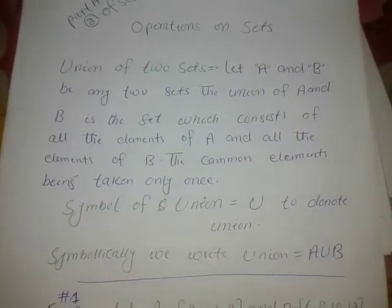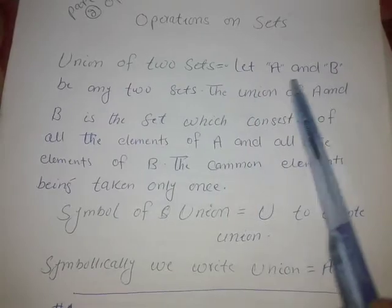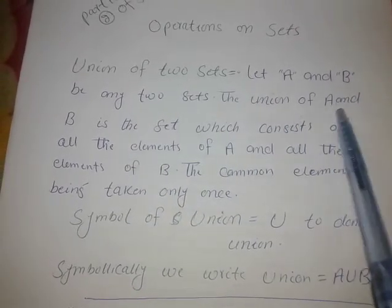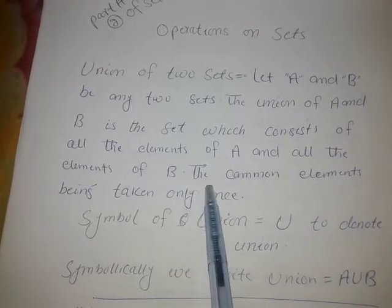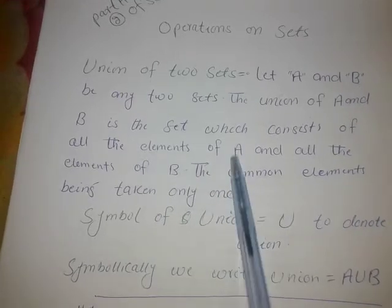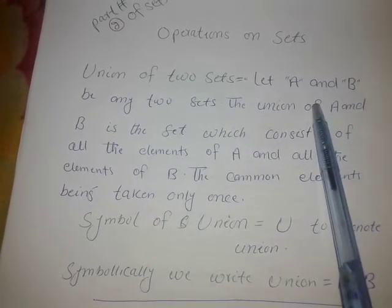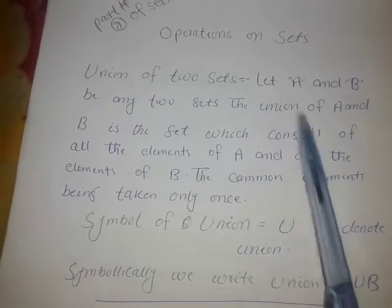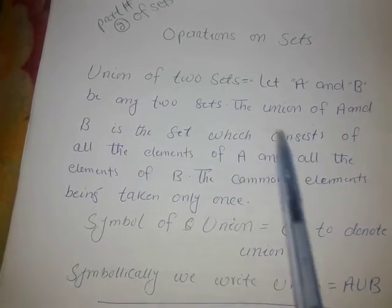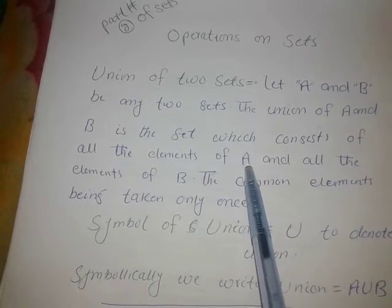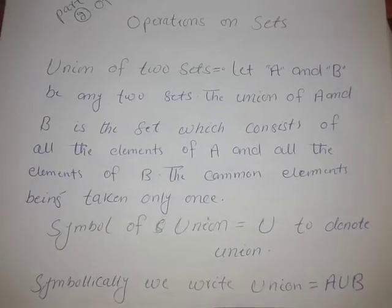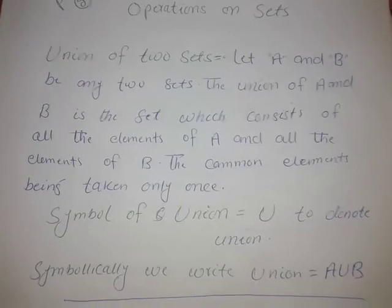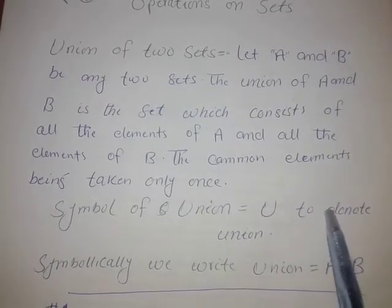The union of sets A and B is a set which consists of all the elements of A and all the elements of B, with common elements taken only once. The union contains all elements — the common elements are included only once. The union symbol is used to denote this operation.